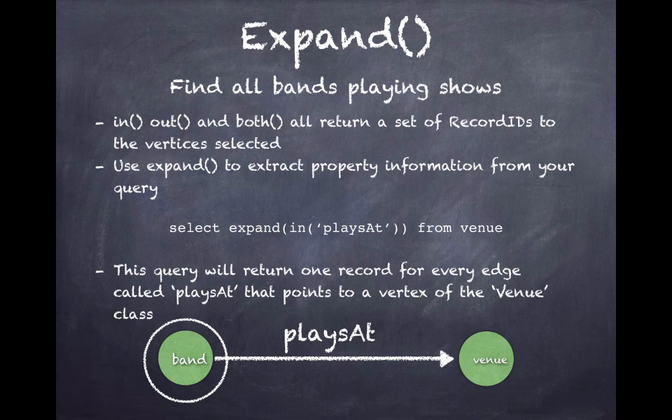EXPAND is a very important function if you want to see the attribute information related to a vertex. IN, OUT, and BOTH all return a set of record IDs to the vertices selected. You'll use EXPAND to extract property information from your query.